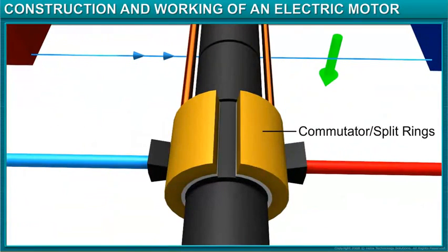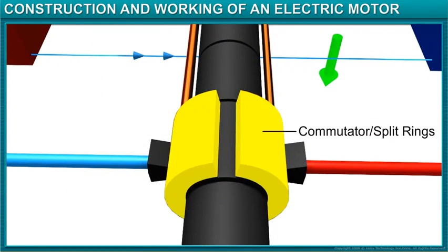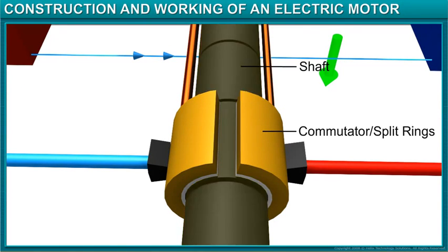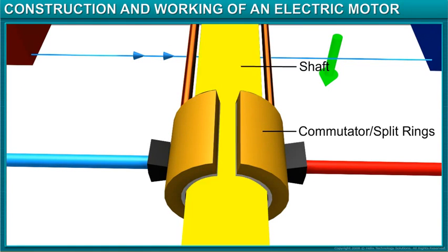A commutator, which is a metal ring split into two, and is also referred to as split rings. This commutator is connected to the two ends of the coil. The shaft passes through the center of the commutator.